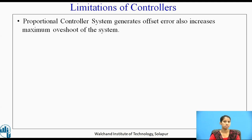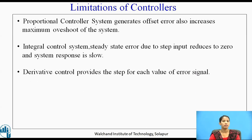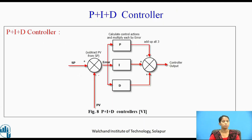The limitations of controllers are as follows. The proportional controller generates offset error and also increases maximum overshoot of the system. In the integral control system, the steady state error due to step input reduces to zero, but the system response is slow. The derivative controller provides a step for each value of the error signal. Due to these disadvantages, P, I, and D controllers are not used individually; rather, the composite of these controllers is used. The figure shows the PID controller, and the most effective control output can be gained by using the PID controller.